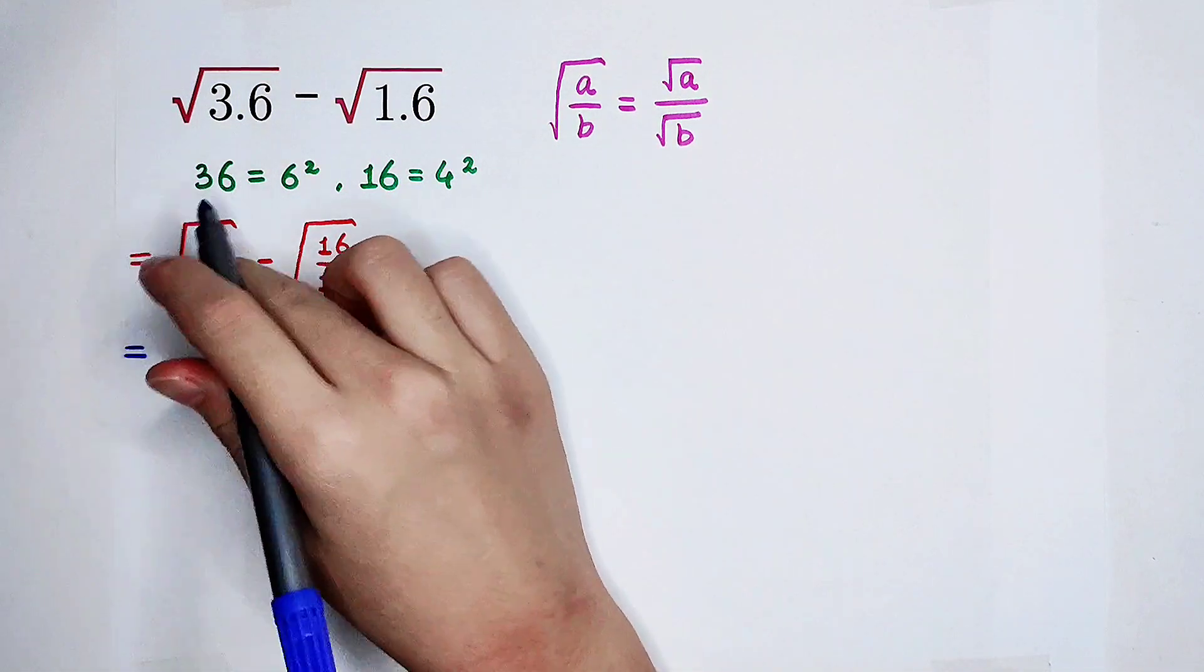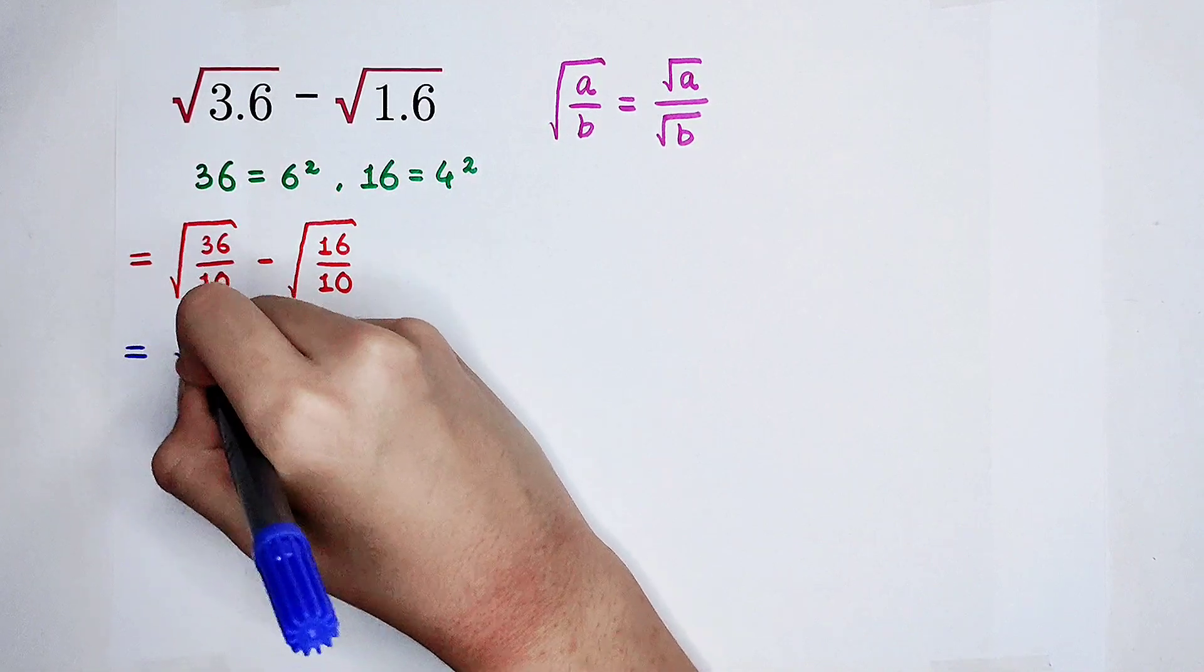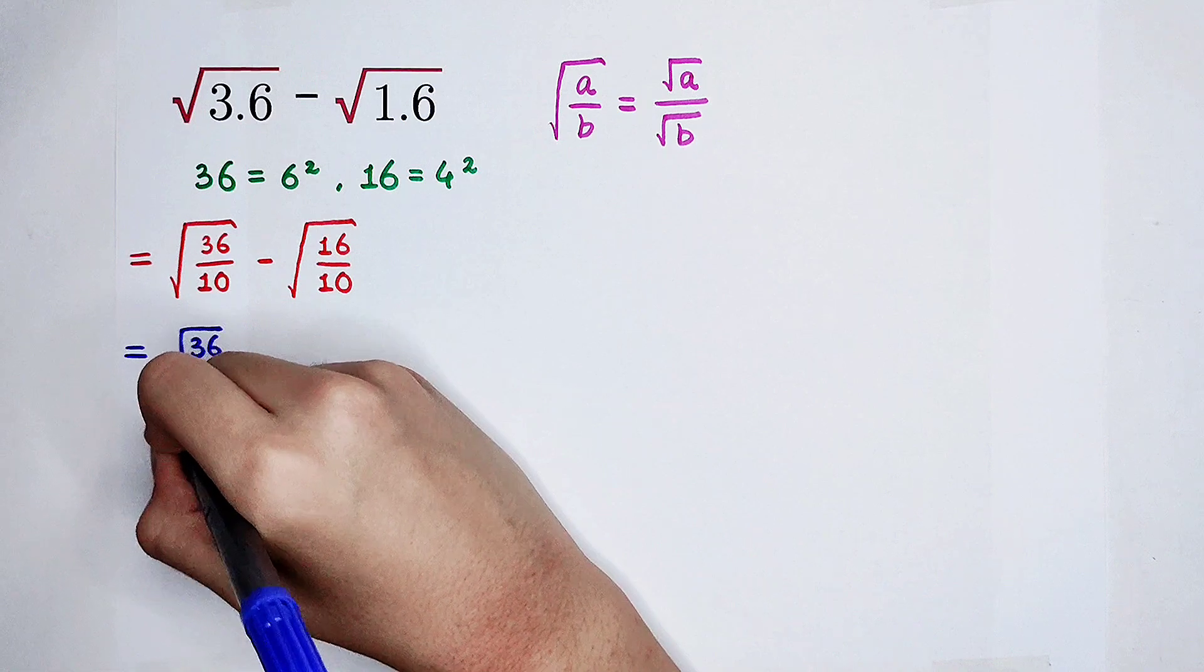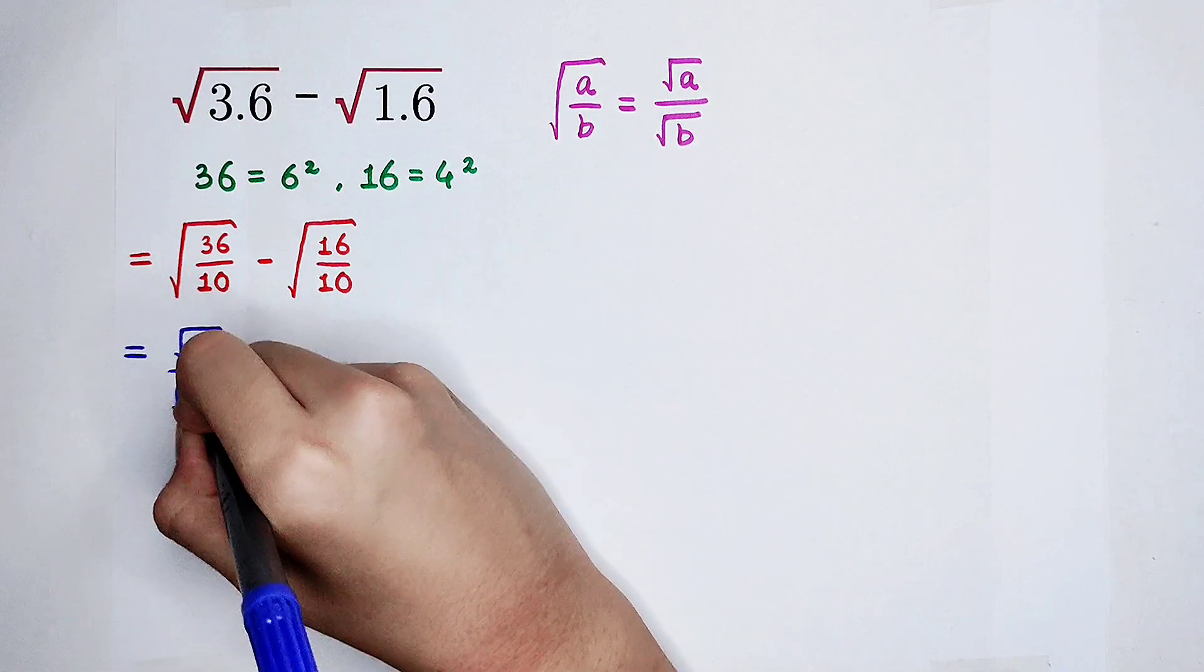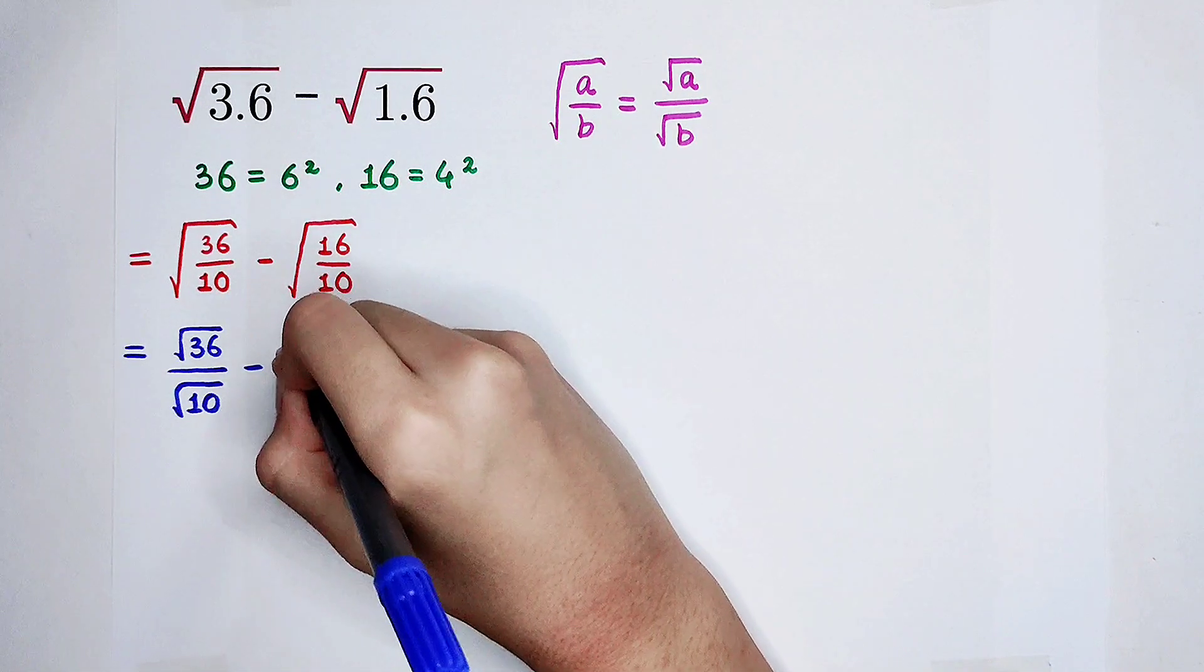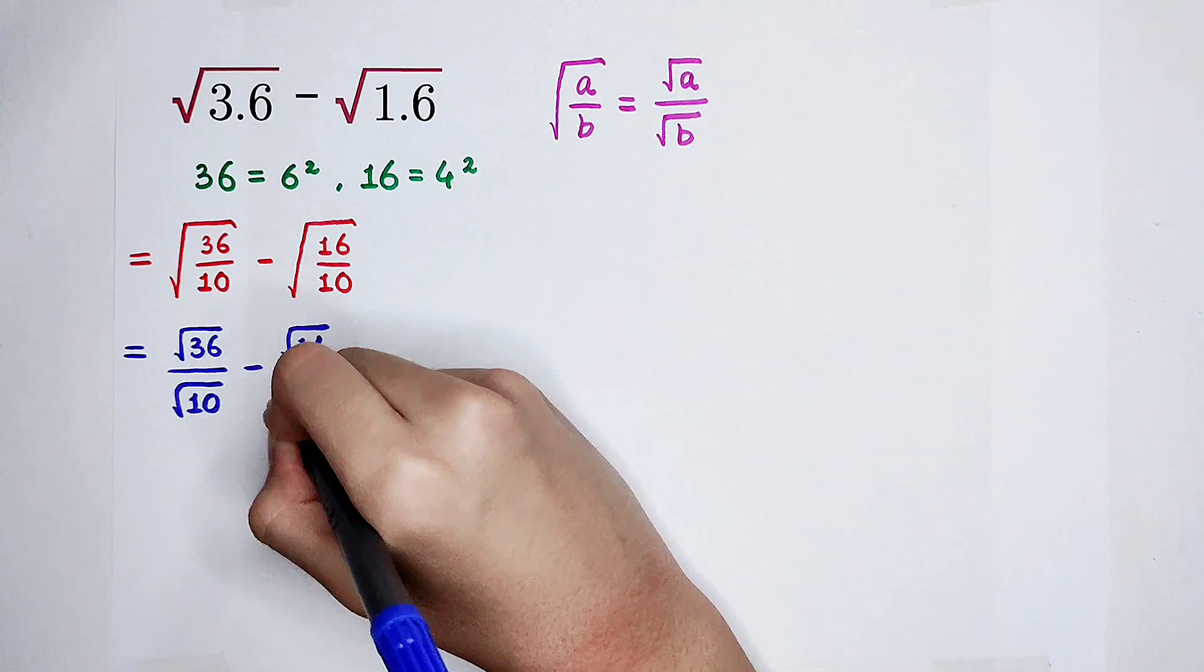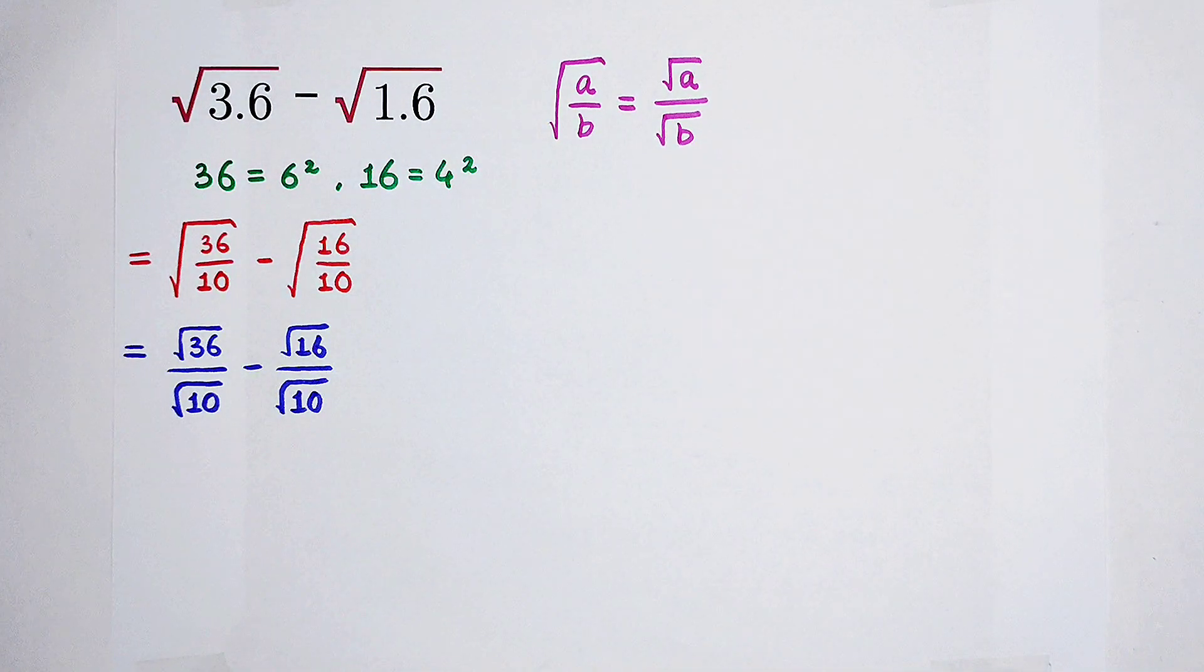So now, square root of 36 divided by 10, it is square root of 36 divided by square root of 10, minus square root of 16 divided by square root of 10.